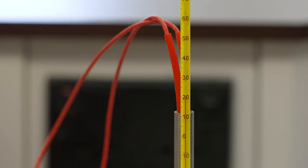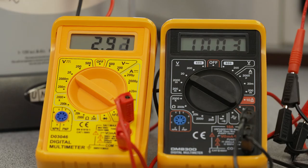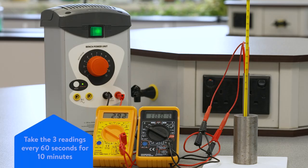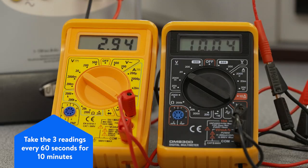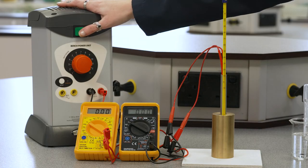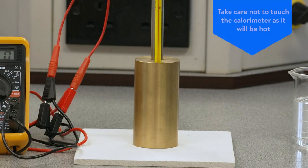Note the temperature and the reading on the ammeter and voltmeter and record these results in the table. Take three readings every 60 seconds for 10 minutes. After 10 minutes switch the power supply off. Take care not to touch the calorimeter block itself as this will be hot.